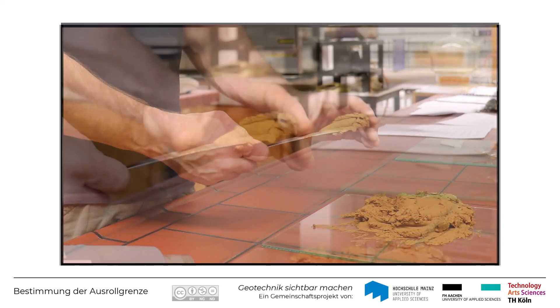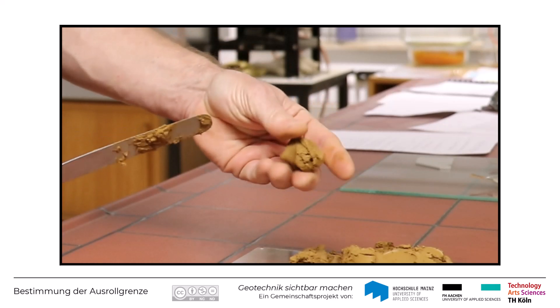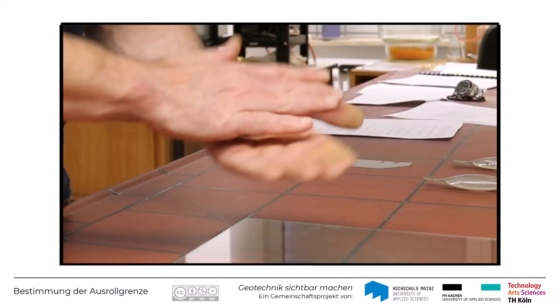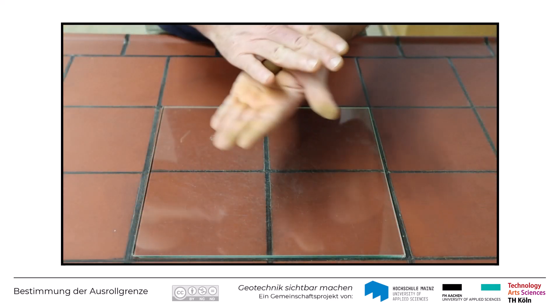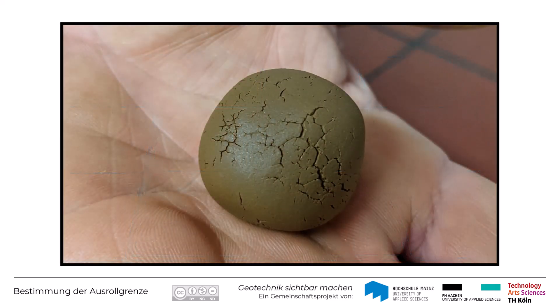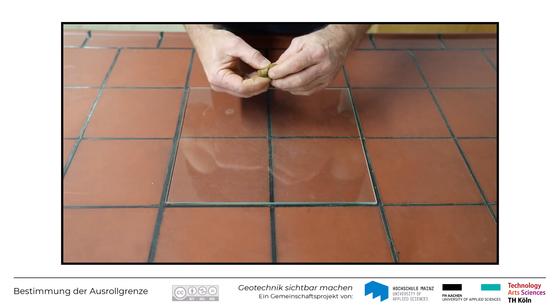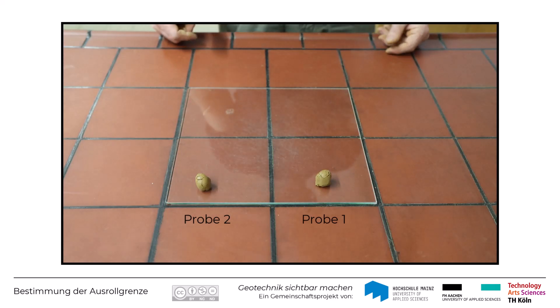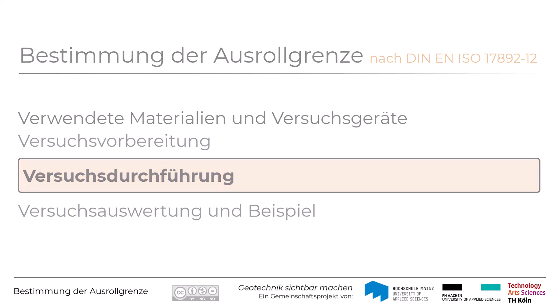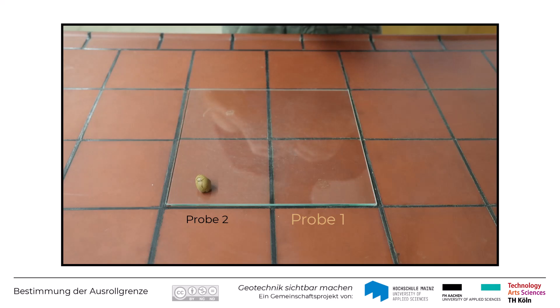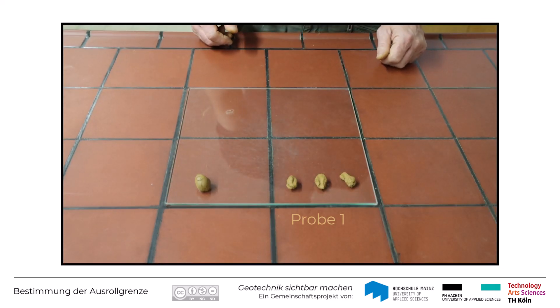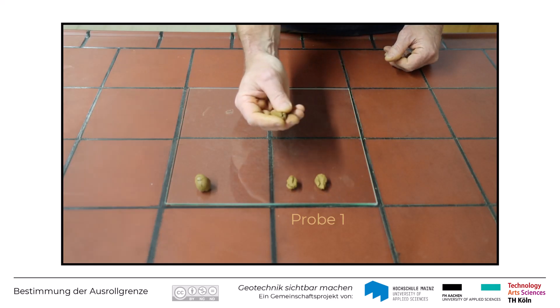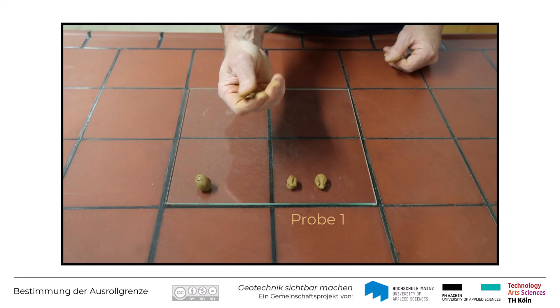Die so vorgetrocknete Bodenprobe wird zwischen den Fingern zu einer Kugel geformt und so lange zwischen den Handflächen gerollt, bis der Boden so stark weiter getrocknet ist, dass er an der Oberfläche leicht einreißt. Dann wird die Kugel in zwei gleiche Portionen von etwa gleicher Masse geteilt. Eine der Portionen wird in drei Unterportionen geteilt. Jede dieser Unterportionen wird dann einzeln zwischen Zeigefinger und Daumen in eine Walze mit einem Durchmesser von etwa 6 Millimeter geformt.